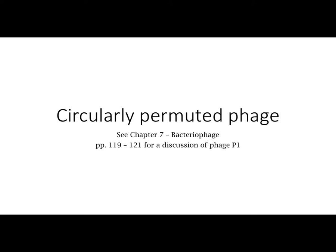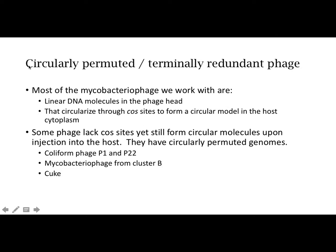So this is just going to be a very short talk about how these things work. There are two terms that are going to be used: one is circularly permuted, the other is terminally redundant. Just to start with some background, most of the mycobacteriophage that we work with are, as you know, linear DNA molecules in the phage head. They circularize through cos sites at the ends of those linear molecules to form the circular molecule, which can either integrate into the host as a prophage, if it's a lysogenic phage, or be used for replication during lytic growth. Some phage, however, do lack the cos sites.